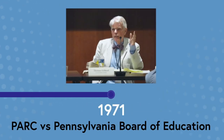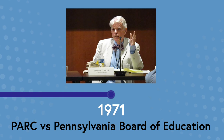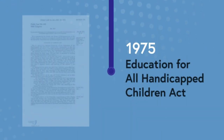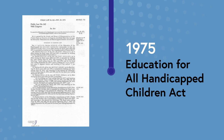Almost 20 years later, the legal precedent set by Brown versus Board of Education was successfully used in another class action. In 1971, 14 students with disability and their families argued that segregated education violated the rights of students with disability under the 14th Amendment. The courts ruled that all students with disability were capable of benefiting from education and that placement in a regular school was preferable to placement in a special or segregated setting. Four years later, a federal law mandated that all children be provided access to a free and appropriate education in the least restrictive environment.